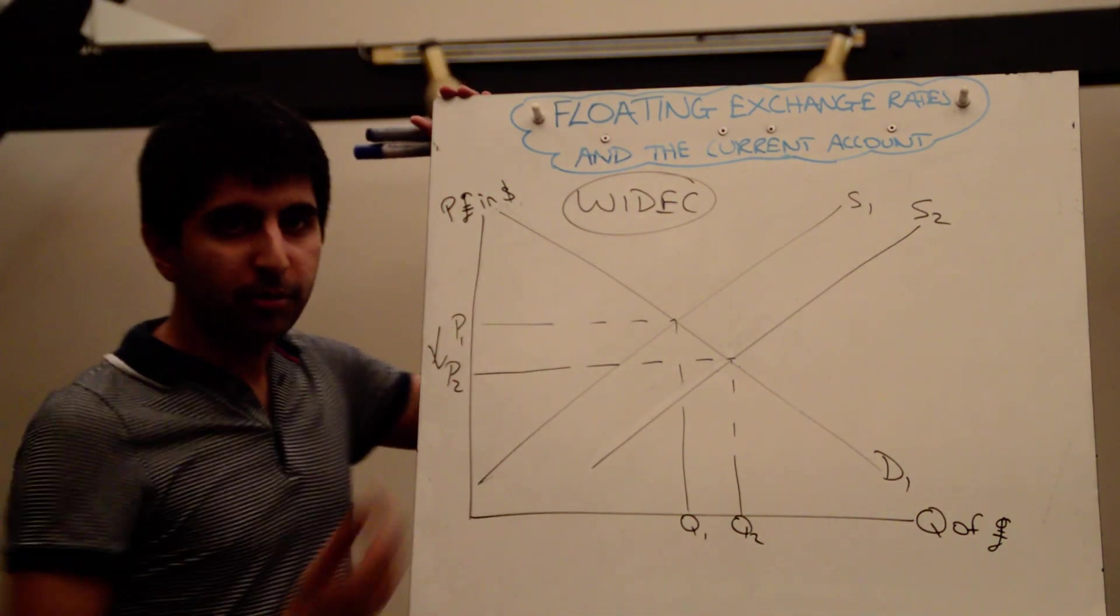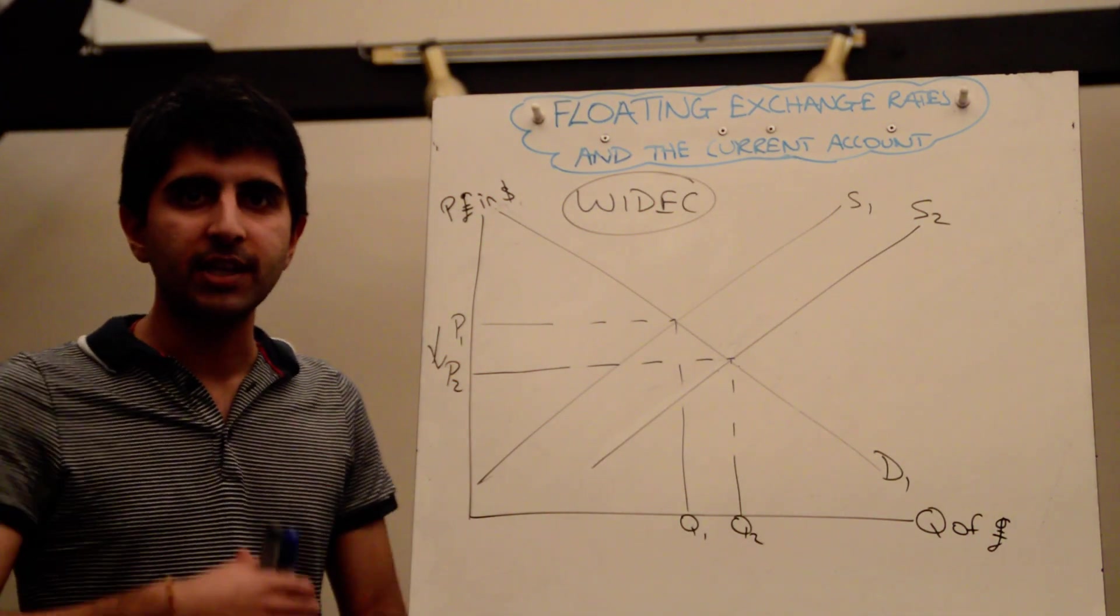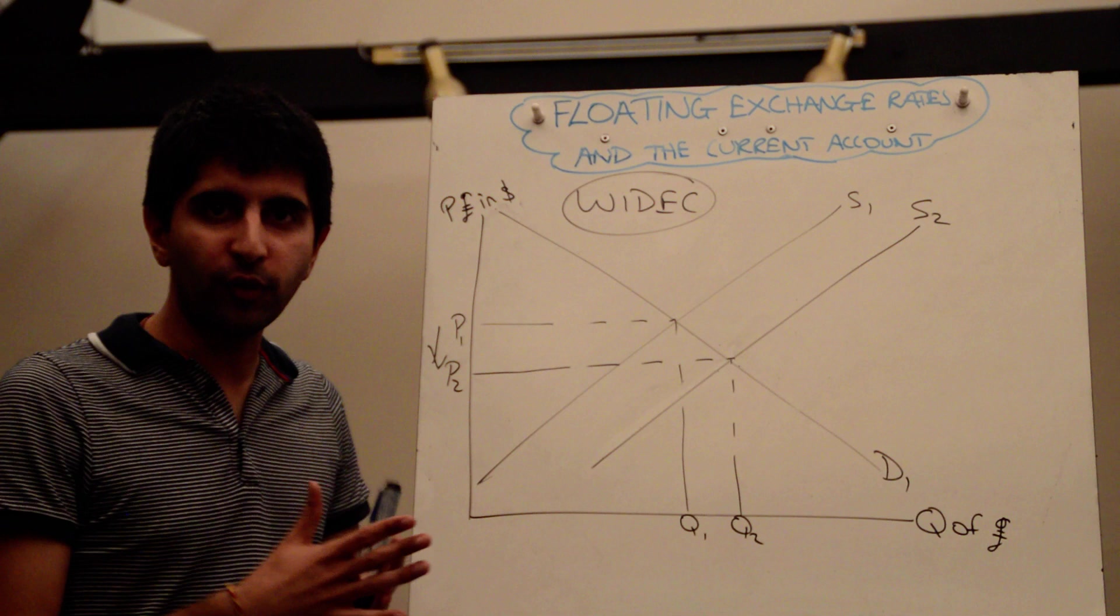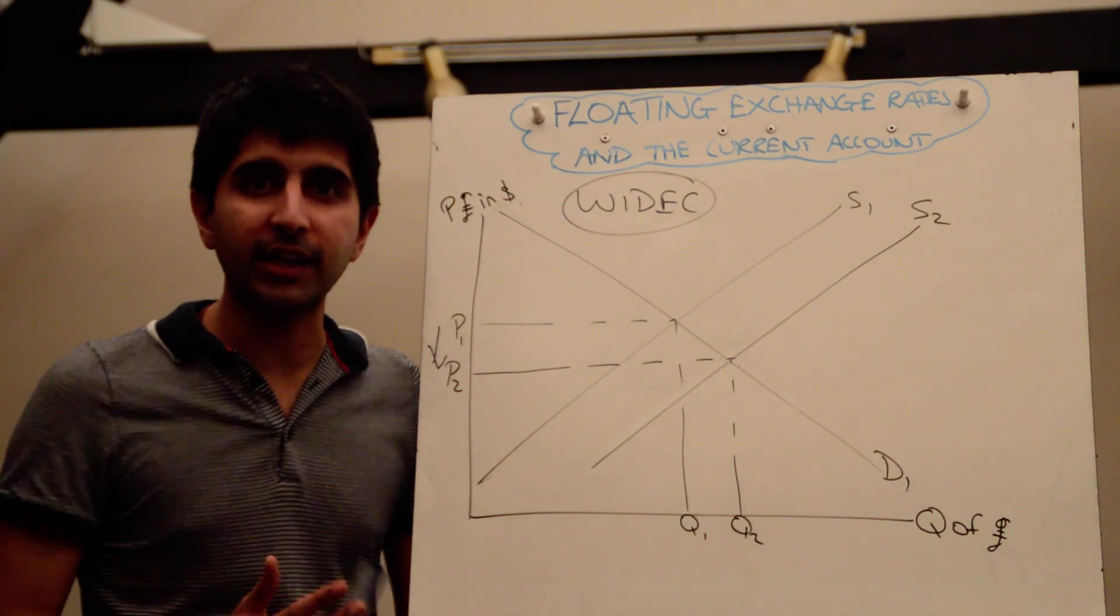That puts downward pressure on the exchange rate which means WIDEC takes place. And with WIDEC, with a weaker exchange rate, you see imports falling and exports rising, helping to automatically correct the current account deficit.